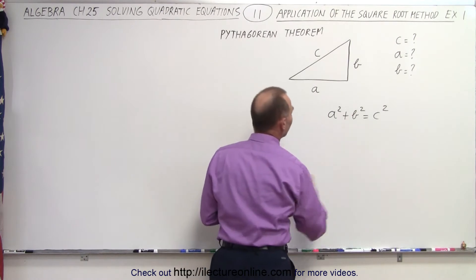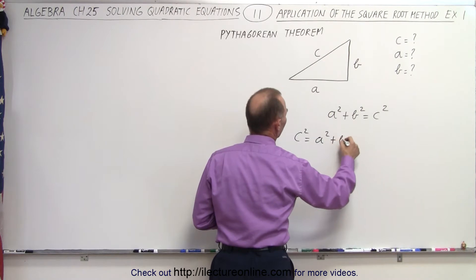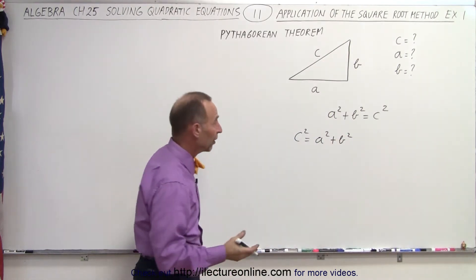First, let's write this as c squared on the left side equals a squared plus b squared. And now we're going to take the square root of both sides.